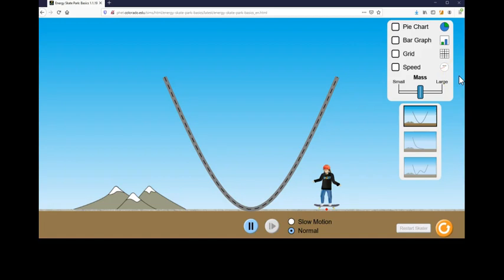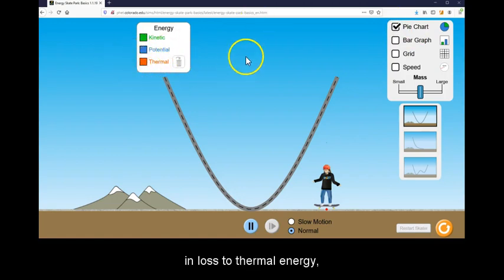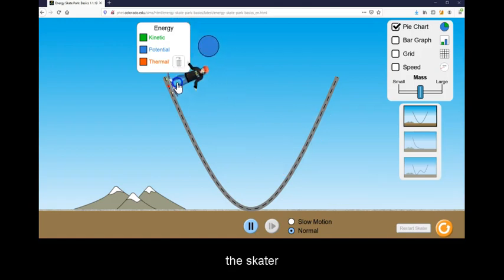Dissipative forces such as friction would result in loss to thermal energy, but this will be ignored. Click, hold and drag the skater to a certain height on the ramp.